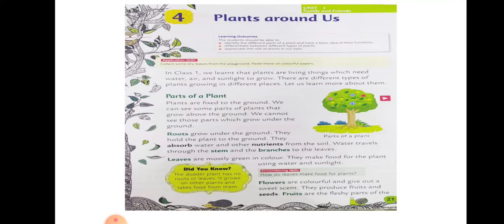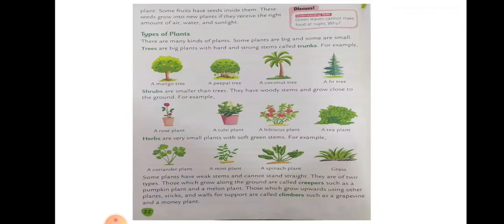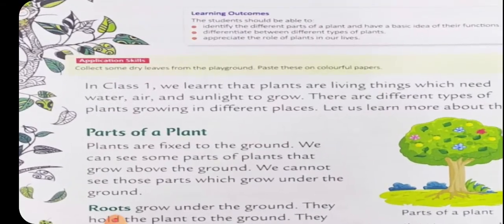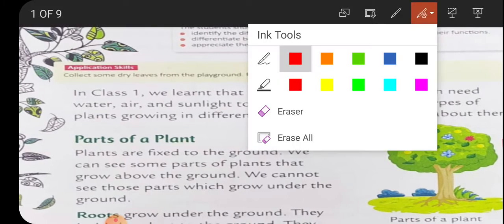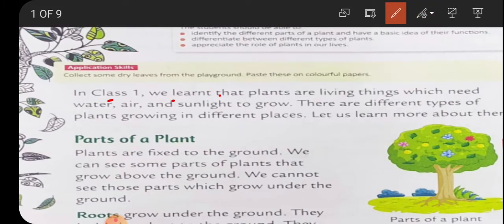Plants Around Us. Let me zoom in. In standard one, you have learned that plants are living things which need water, air, and sunlight to grow. There are different types of plants growing in different places. Let us learn more about them. Now we'll begin with the parts of the plant first.